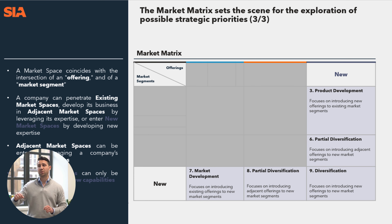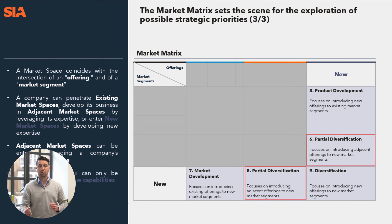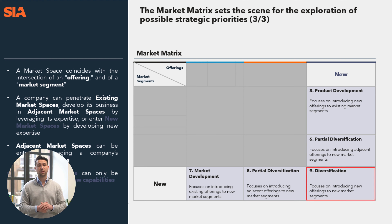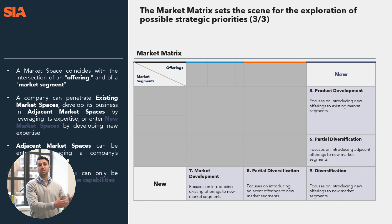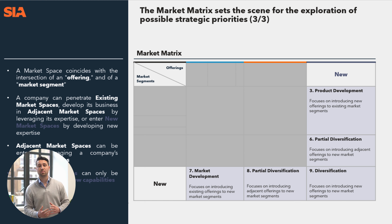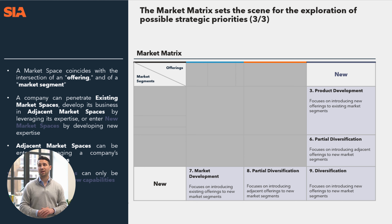Partial diversification either focuses on introducing adjacent offerings into new markets, or adjacent market segments with new offerings. Finally, we have total diversification in the bottom right-hand corner — when organizations focus on introducing entirely new offerings into entirely new market segments. One high-level example of this is Amazon. Amazon started as an e-commerce online book retailer. Today they have AWS, a cloud-based B2B service, completely unrelated to their original e-commerce book retailer business. So they moved into an entirely new offering in an entirely new market segment — total diversification.